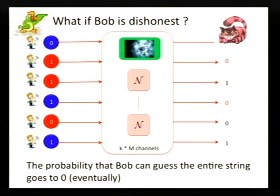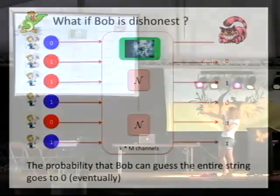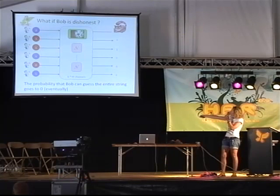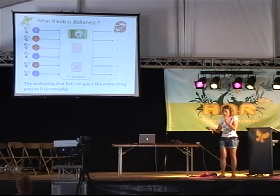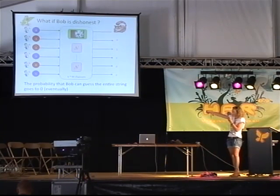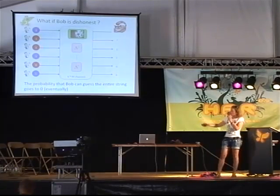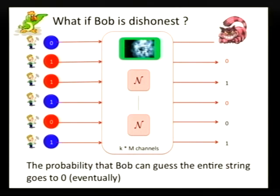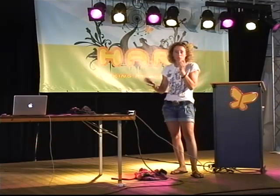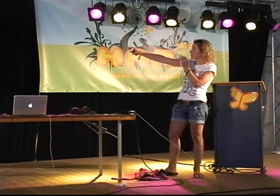What happens if Bob is dishonest? In this case, we are exactly in the setting we looked at earlier: we sent many bits, and Bob has some kind of storage — he may have a quantum computer and do any encoding he wants — but he only has some number of noisy storage channels at his disposal. The uncertainty relation tells us that if the capacity of this channel is too low, the probability that Bob guesses the entire string — every single bit correct — goes to zero when we have a very large number of bits. This is how the storage assumption together with the uncertainty relation comes in.